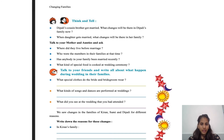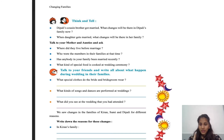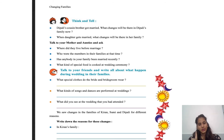We saw changes in the families of Kiran, Sumi, and Dipali for different reasons. Write down the reasons for these changes. In Kiran's family, a newborn baby came. In Sumi's family, the father's promotion caused a transfer to another city. In Dipali's family, a new member — the cousin's wife — joined. You have to write the reasons for each family's change.